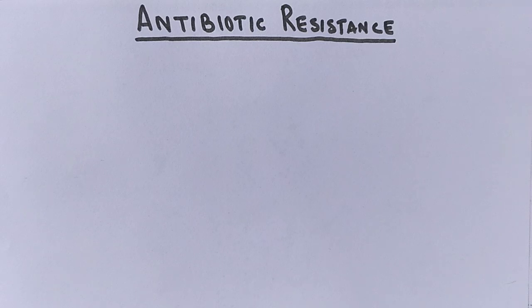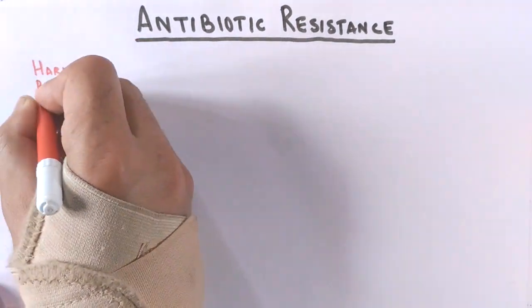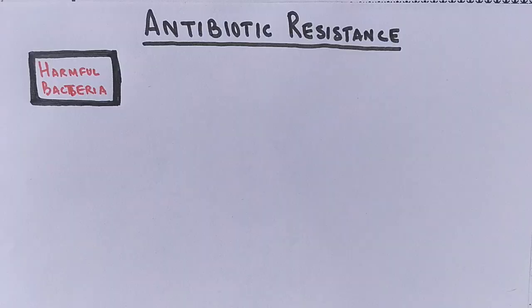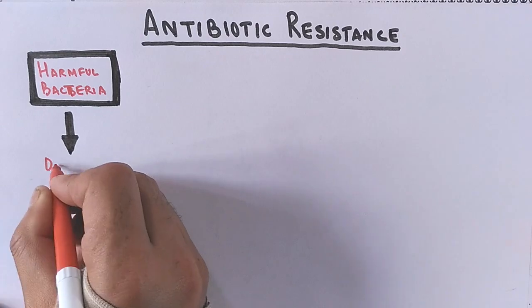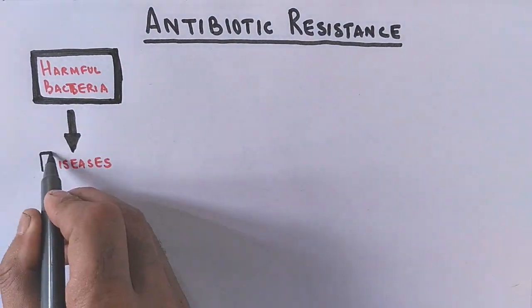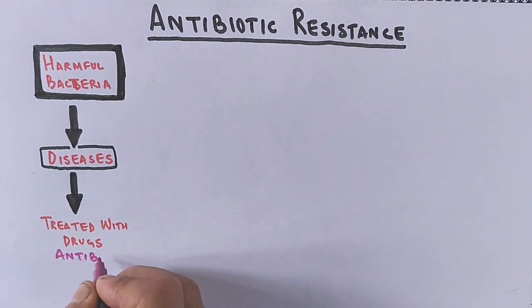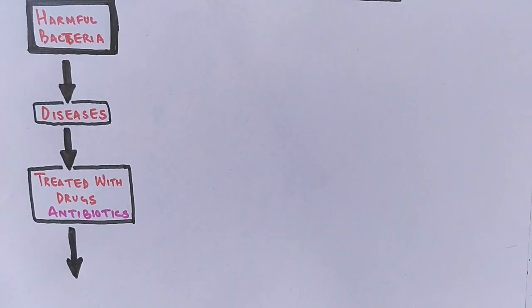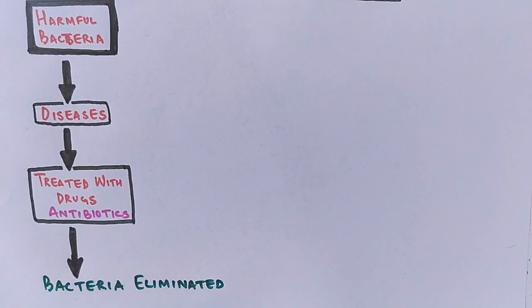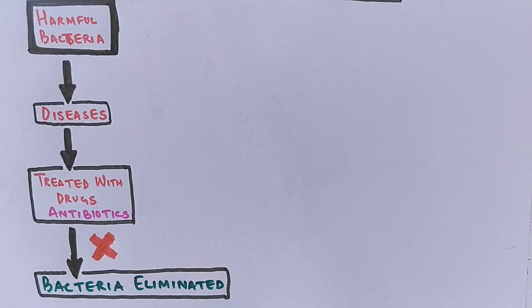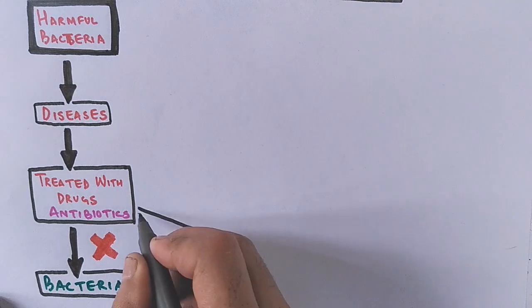Now let's get into the detail of how antibiotic resistance occurs. First, there is the normal pathway: harmful bacteria are present in our body, they cause disease, they are treated with antibiotics, and finally bacteria are eliminated. But there is another pathway where bacteria are not eliminated — that is when bacteria have acquired resistance.